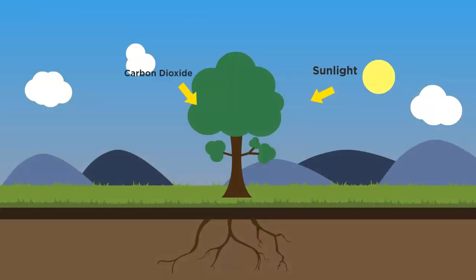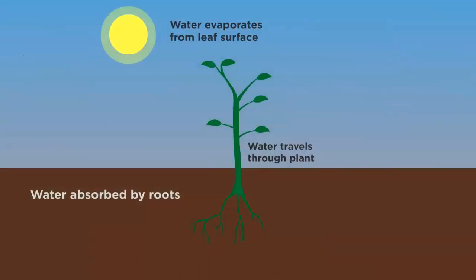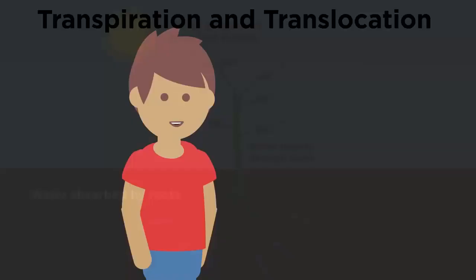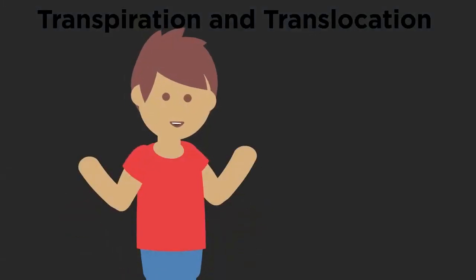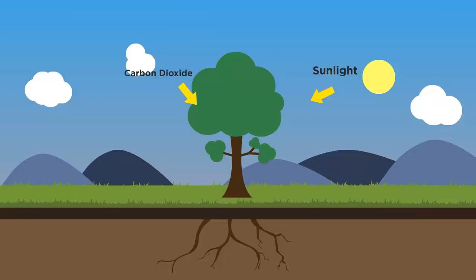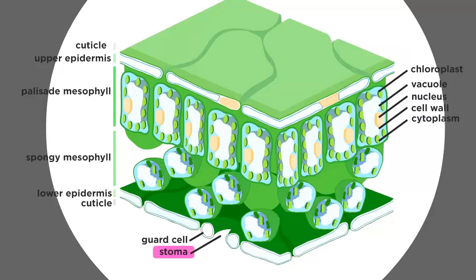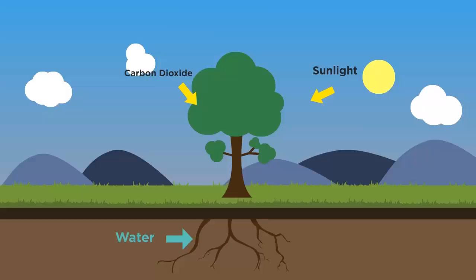But where do the carbon dioxide and water come from? Plants absorb water through their roots and it moves through the plants and into the leaves by transpiration. Watch our video on xylem and transpiration to learn more about this process. Carbon dioxide enters into the leaves from the air through the stomata on the underside of the leaf.